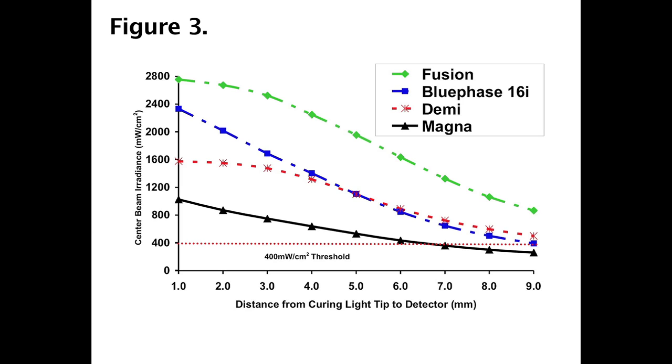Note how each light behaves differently as the distance increases. For example, the DEMI initially delivered a lower irradiance than the blue phase 16I, but beyond 6 mm, the DEMI delivered a greater irradiance than the blue phase 16I.